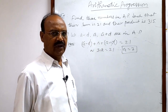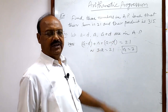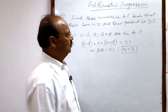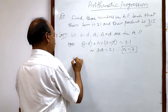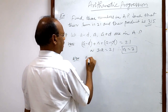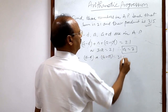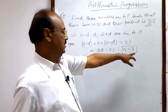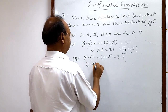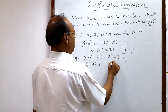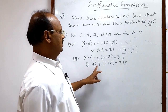If we get the value of d, we can easily find a minus d, a, and a plus d. The clue for finding d is that the product of the three numbers is 315. So (a minus d) times a times (a plus d) equals 315. Substituting a equals 7: (7 minus d) times 7 times (7 plus d) equals 315.